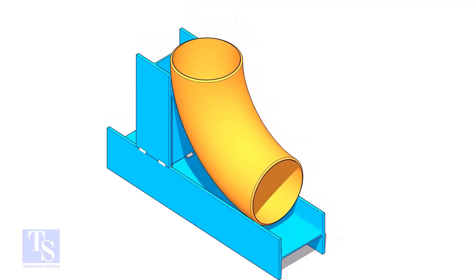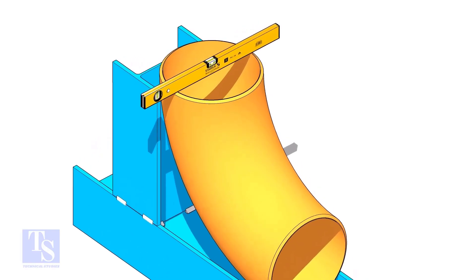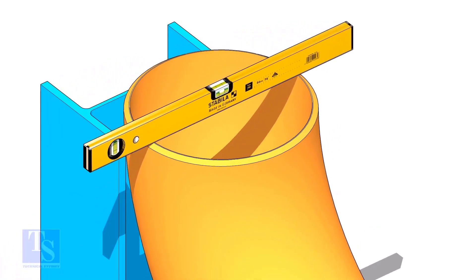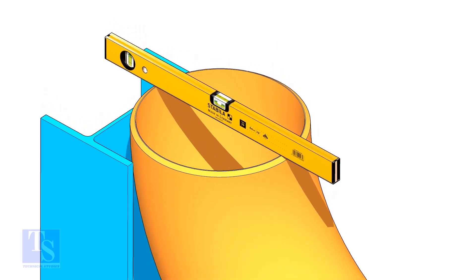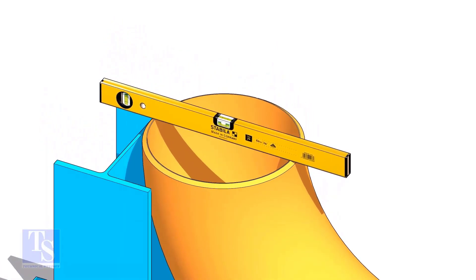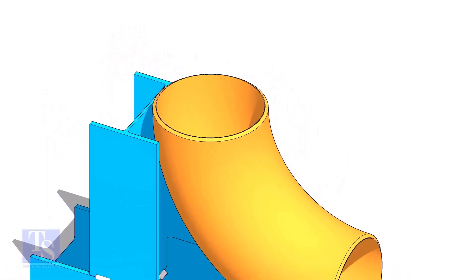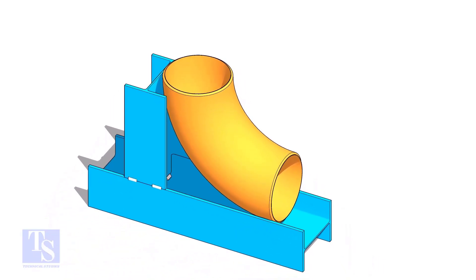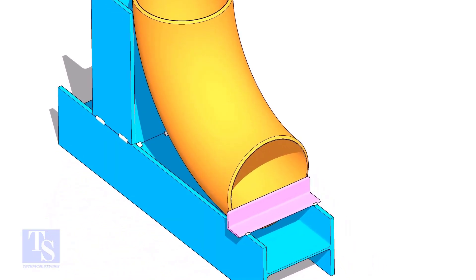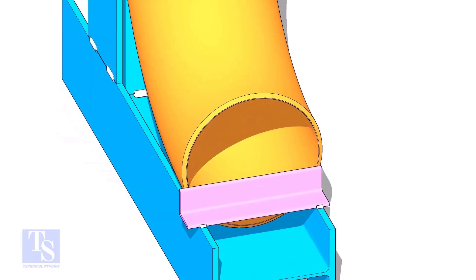Put the elbow in the jig. Level the top face of the elbow on both ways. Tack weld a piece of angle bar or a piece of a plate at the bottom side of the jig to arrest the elbow.